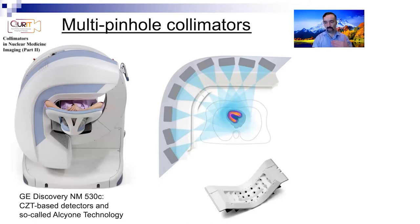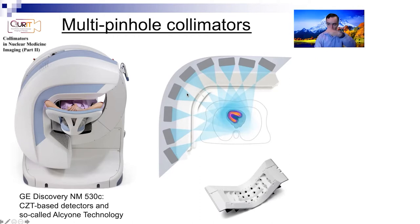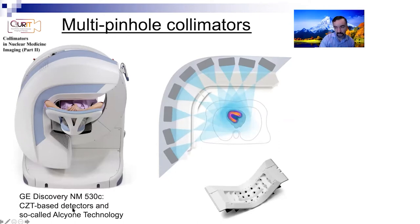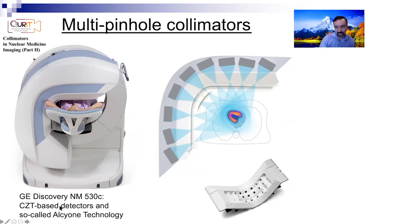This is not just scintigraphy or planar imaging - in this case, you're covering the heart from many angles. So this is really becoming SPECT imaging because you're covering from many angles. Here is the NM530C scanner, which uses semiconductor detectors - the CZT-based detectors and the so-called Alcyon technology.